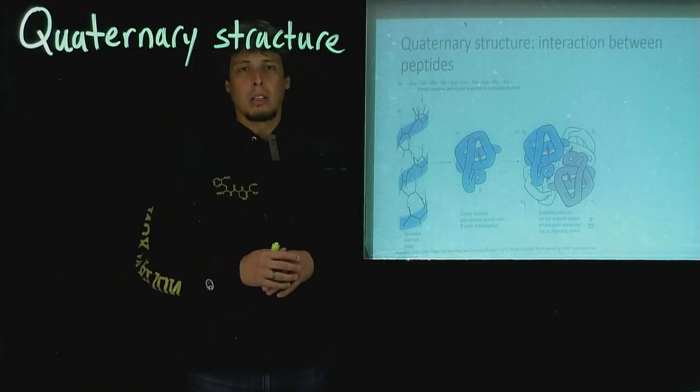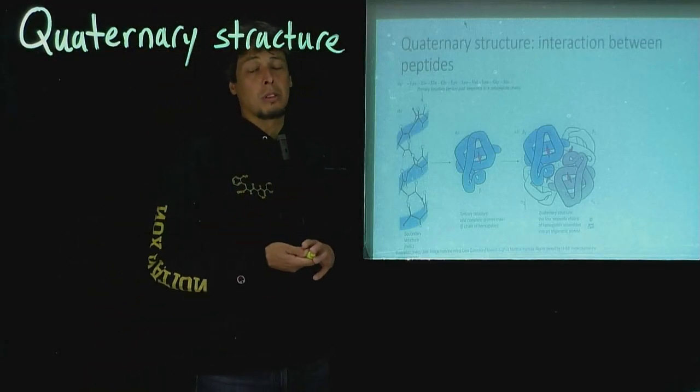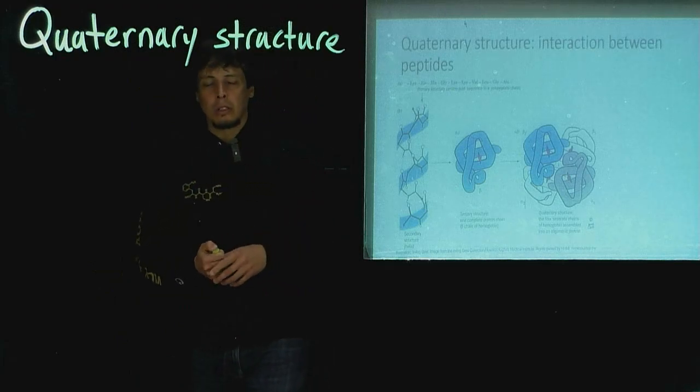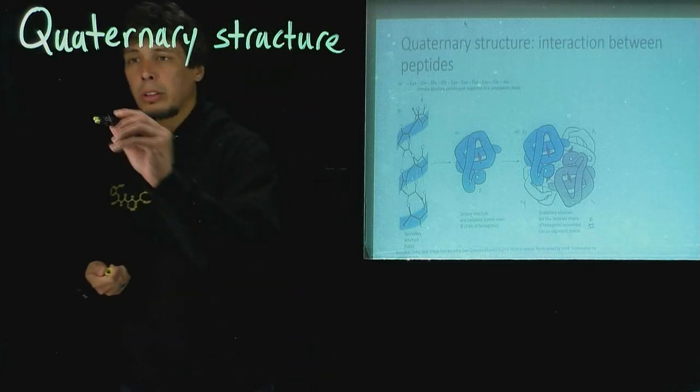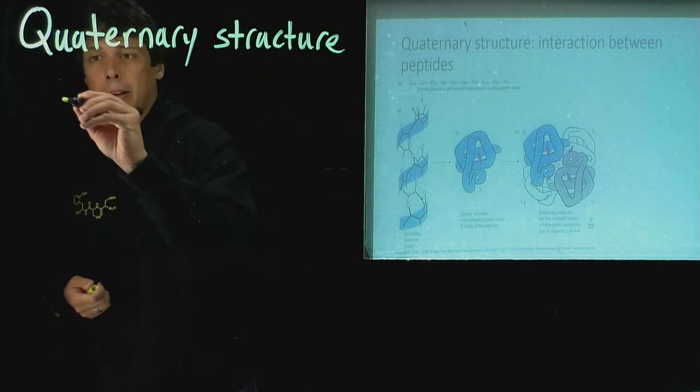So the final level of complexity in protein structure is going to be quaternary structure. Quaternary structure can only occur when there's more than one polypeptide.